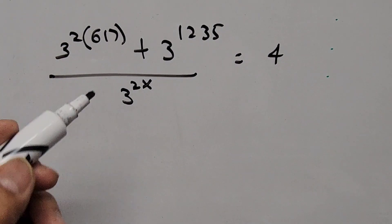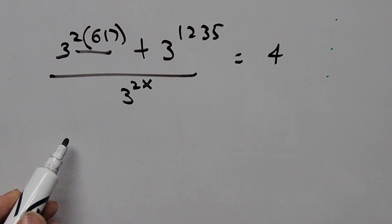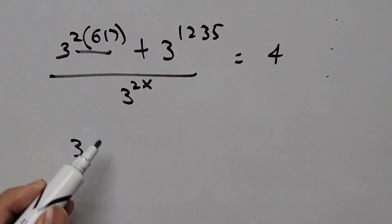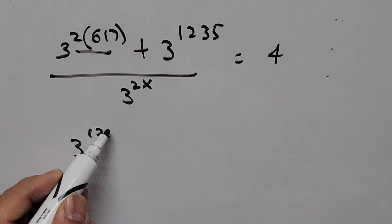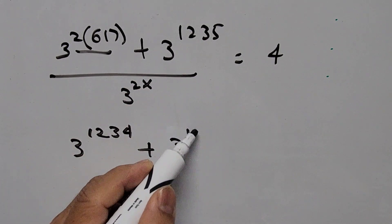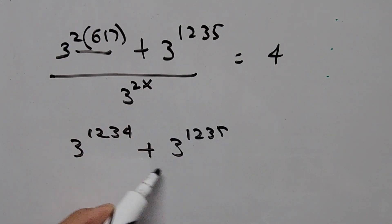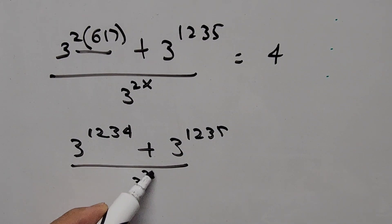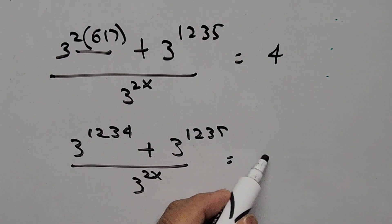So from here we're simplifying the exponent. So this is now 3 raised to the power of 1234, then plus 3 to the power of 1235, divided by 3 to the power of 2x, and this is equal to 4.